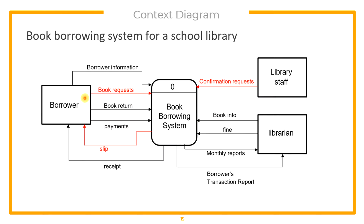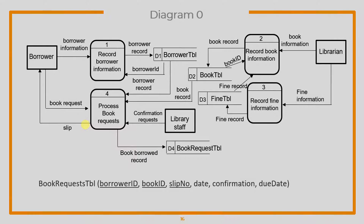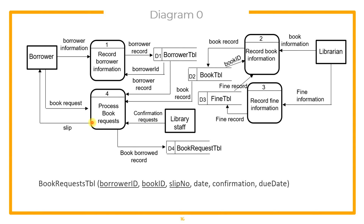Let's proceed with borrowing of books. The borrower requests the book, it is confirmed by the librarian staff, and if confirmed, a slip is given to the borrower. The borrower requests a book, and the system checks if the book is available in our table using the book ID and date — processed using the system date. Confirmation comes from the librarian along with the due date, and a slip is generated by the system and given to the borrower.